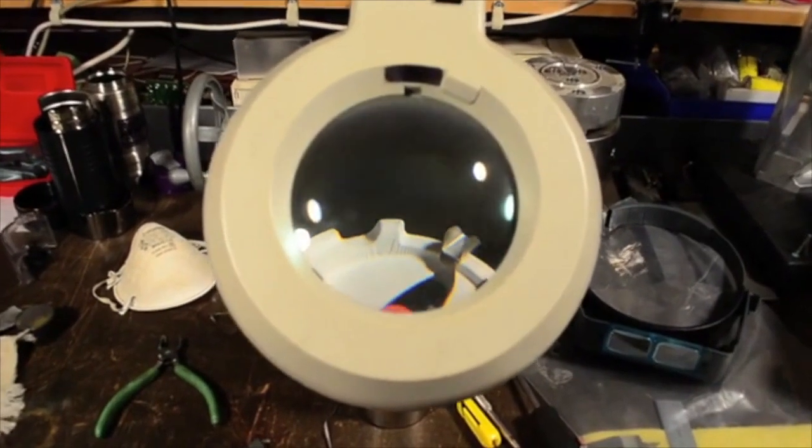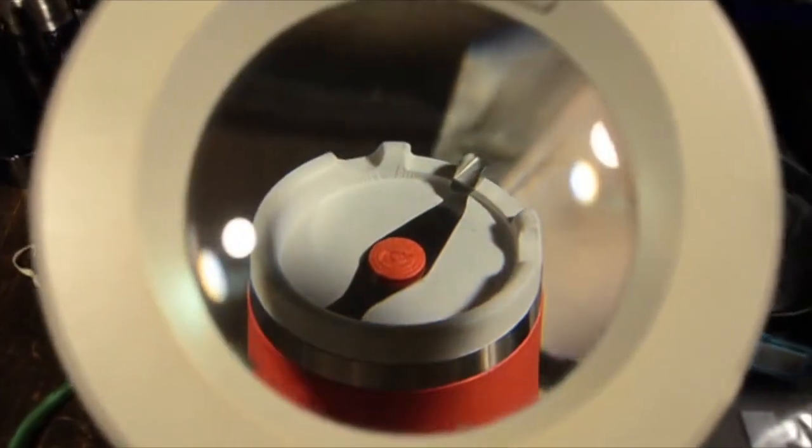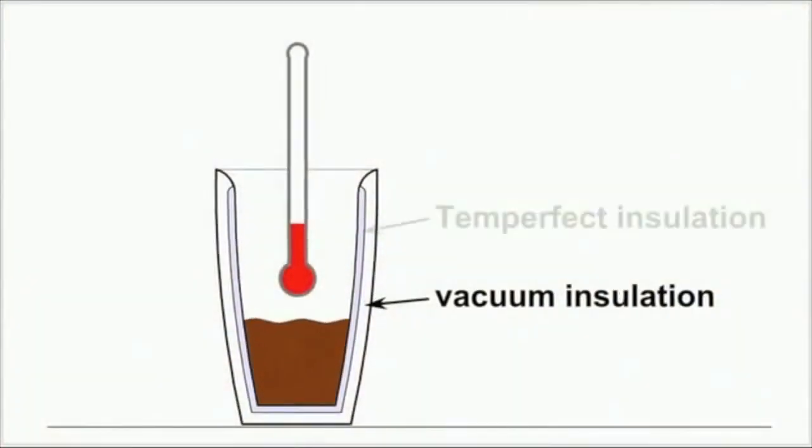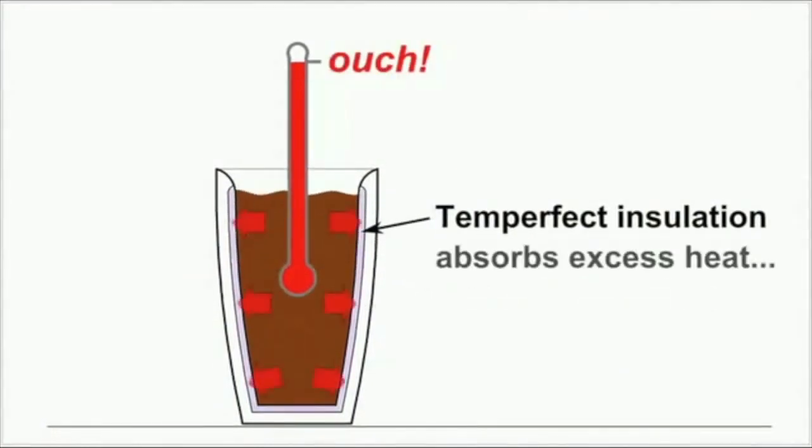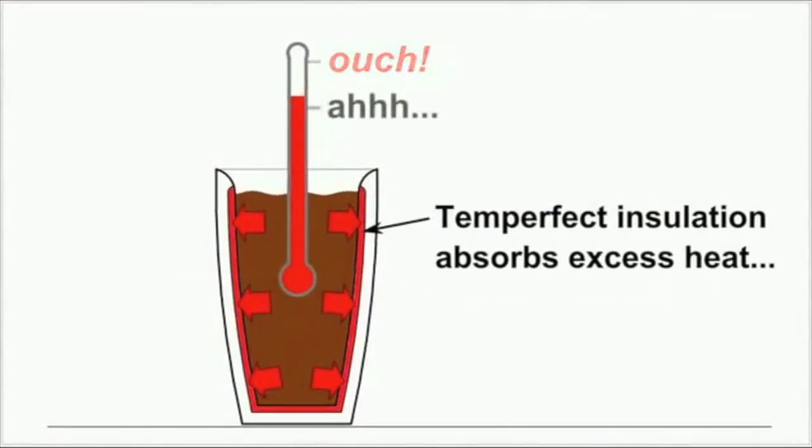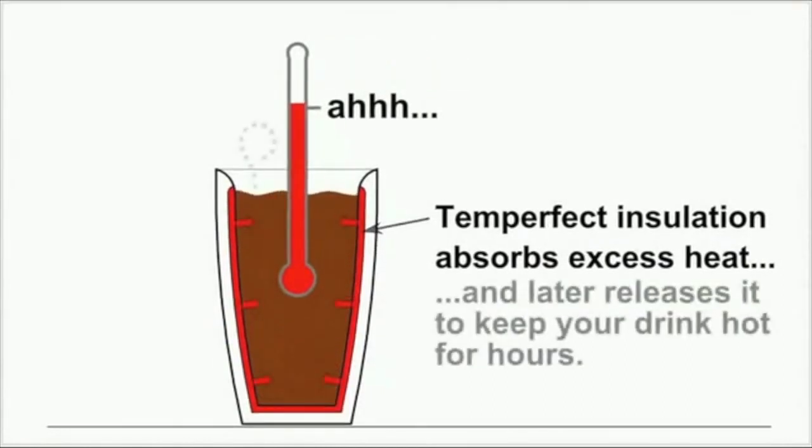Now I have a vacuum-insulated mug which brings any hot drink to a perfect drinking temperature in about 2 minutes. The secret is an active insulation layer which absorbs the excess energy from the drink initially and later uses this energy to keep the drink's temperature constant.